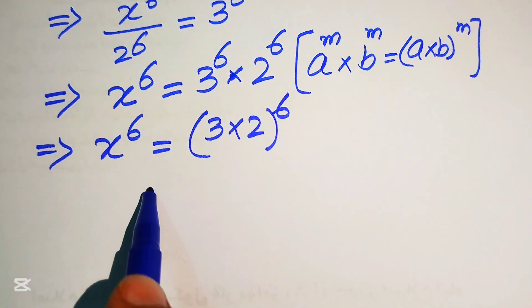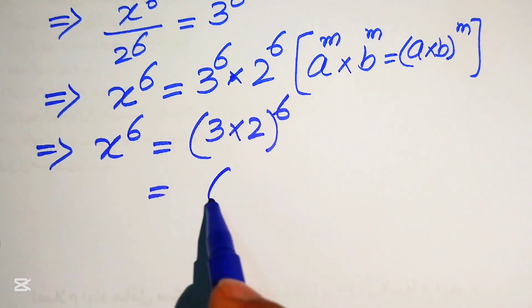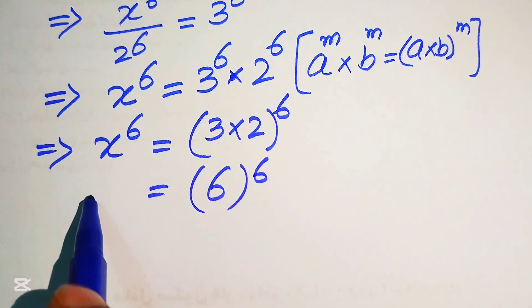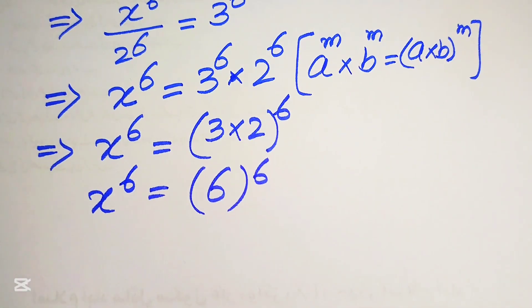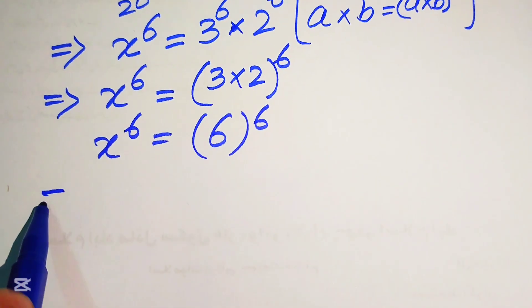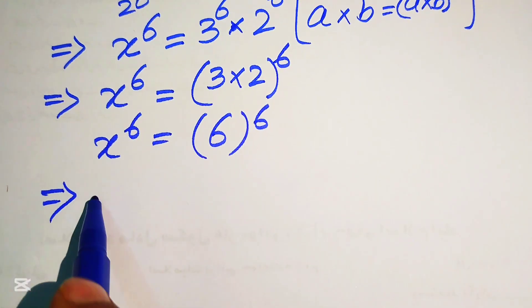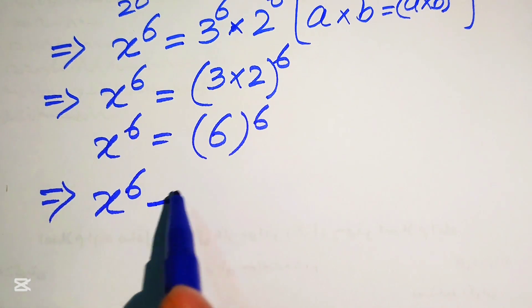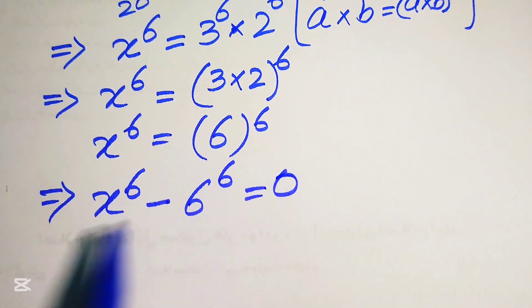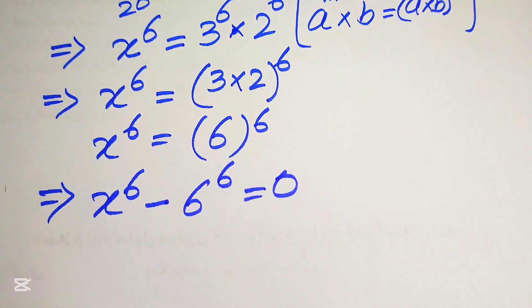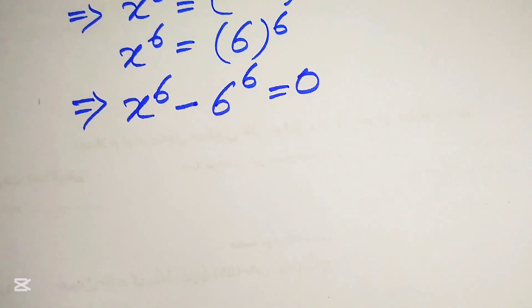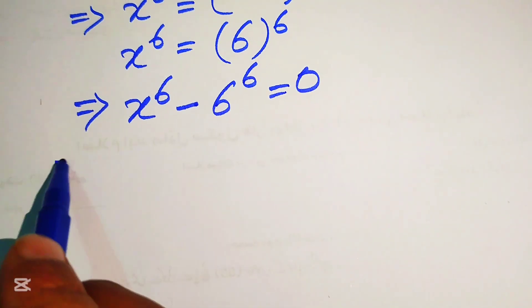So we have 3×2 = 6, giving us x^6 = 6^6. We move 6^6 to the left-hand side and it becomes x^6 − 6^6 = 0.